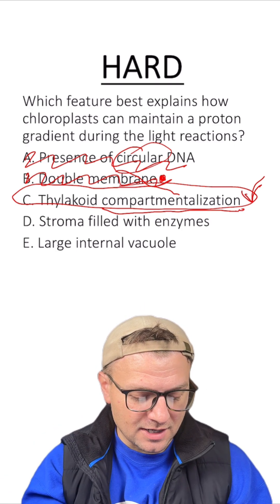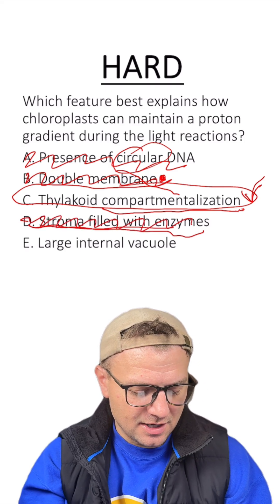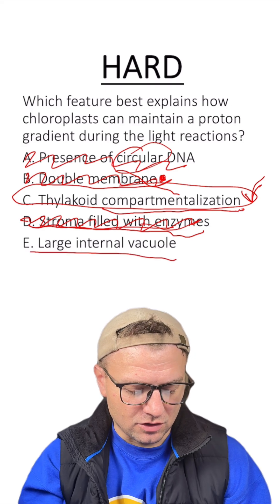D, stroma filled with enzymes. That would be for the light independent reactions, not for the light dependent reactions. That's out. And then E, large internal vacuole. No, we're not talking about vacuoles since they're not in the actual chloroplasts. This is why C is the right answer.